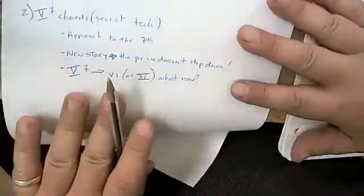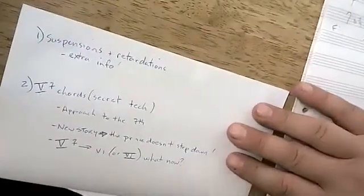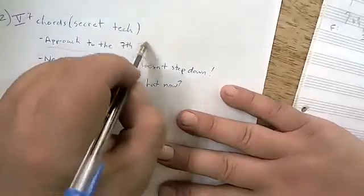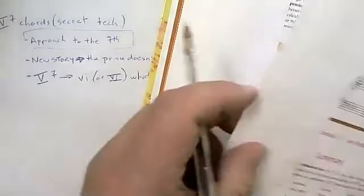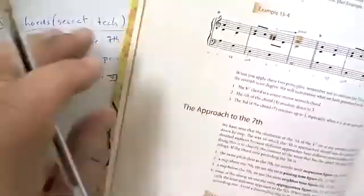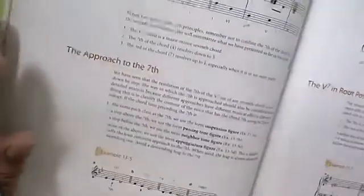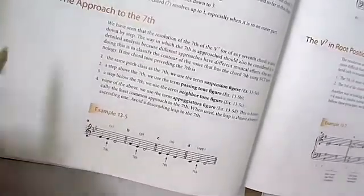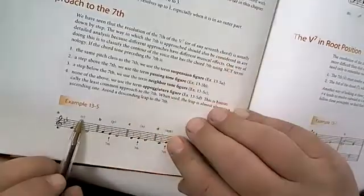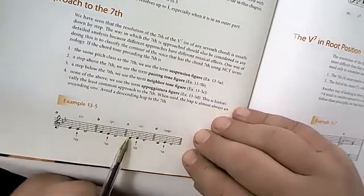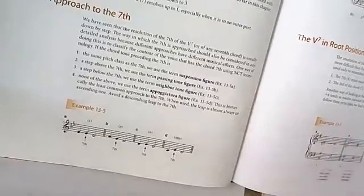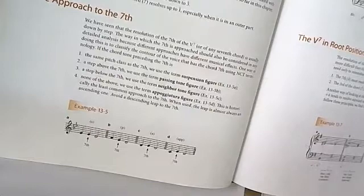This is a nice segue because we suspended the sevenths of chords and brought them down. Moving to chapter 13 on five-seven chords, page 200: the textbook categorizes how you approach the seventh of the chord. If you hold it over and resolve down, it's a suspended figure. Stepping down into it and out is a passing tone figure. There are also neighbor tone and appoggiatura figures.